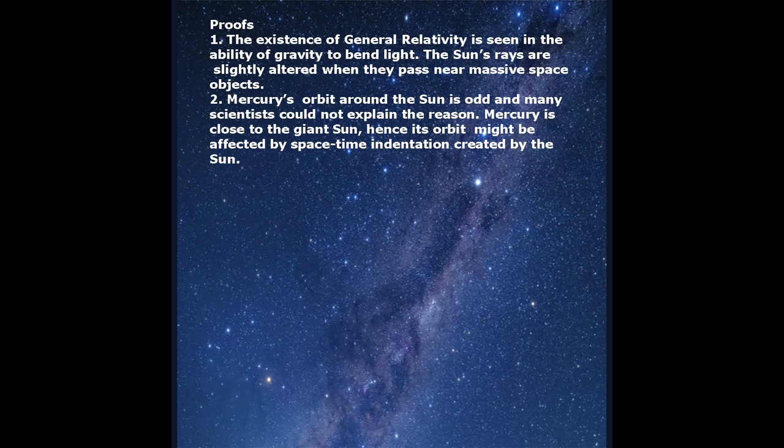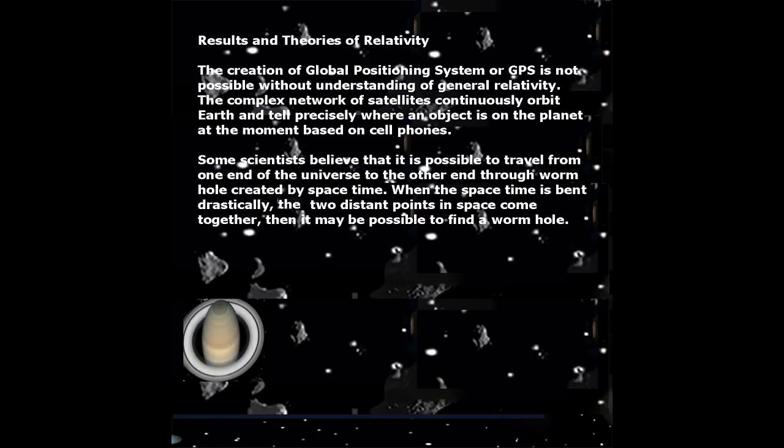Mercury's orbit around the Sun is odd and many scientists could not explain the reason. Mercury is close to the giant Sun, so its orbit may be affected by the space-time indentation created by the Sun.